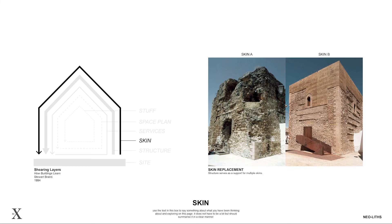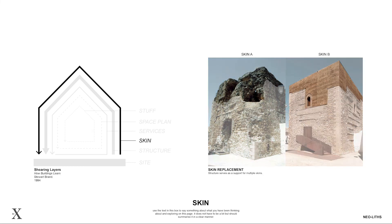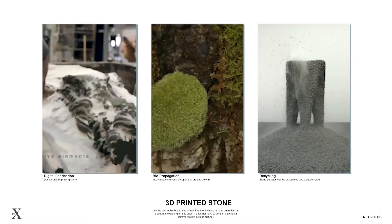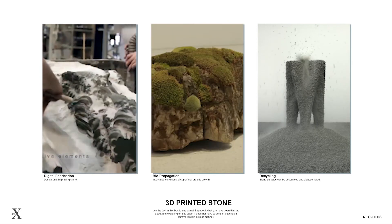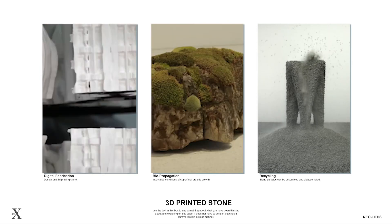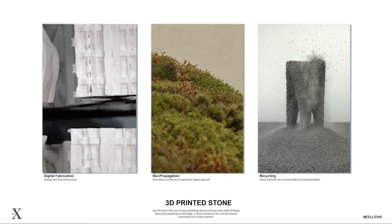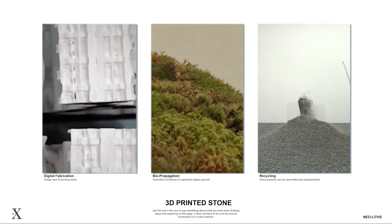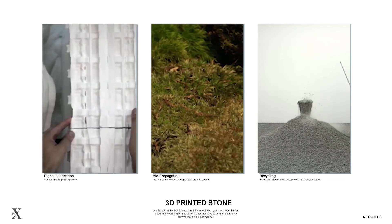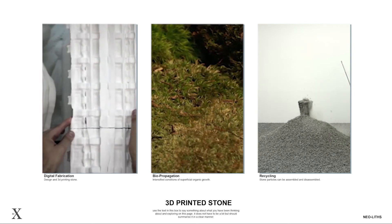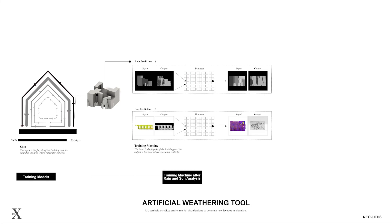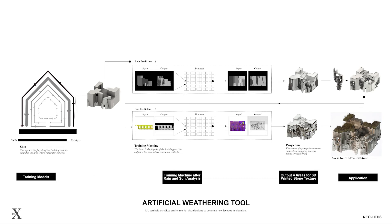The skin is the layer of the building with direct contact to the weather and with the highest exposure to environmental conditions such as sunlight and rain. We are utilizing 3D printed stone to create a skin sublayer in the weather-prone areas within the timber enclosure. This material can take intricate forms with high resolution textures. For this, we created an artificial weathering tool utilizing Pix2Pix, which uses rain and sun analysis to predict areas where most weathering will happen.